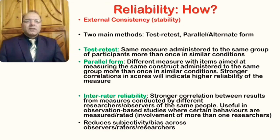Inter-rater reliability helps in reducing subjectivity or bias across observers, raters, or researchers. As different researchers and data collectors can have certain subjectivity when collecting data, ensuring that a particular instrument has inter-rater reliability will aid the overall reliability of the research process and outcomes.